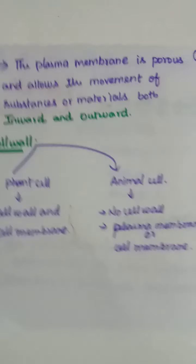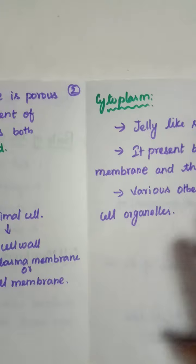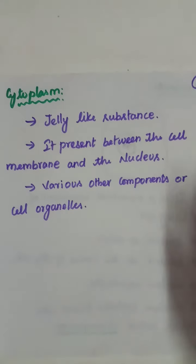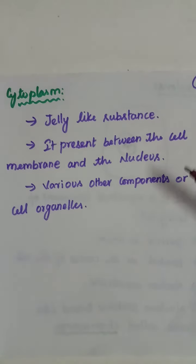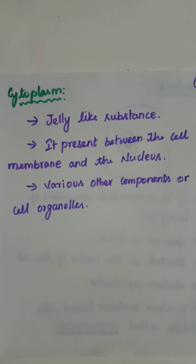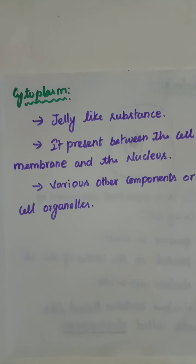Now we will see the cytoplasm. The cytoplasm is a jelly-like substance. It is located in between the cell membrane and the nucleus. The space between the cell membrane and nucleus is where the cytoplasm is found.